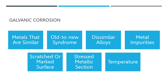There are several types of galvanic corrosion: similar metals, old-to-new syndrome, dissimilar alloys, metal impurities, scratched or marked surface, stressed metallic section, and temperature. When two distinct types of metals are metallically connected while in the electrolyte, corrosion manifests most obviously. Every metal has a unique electrical potential; the metal with the most negative potential is the anode and the less negative one is the cathode. An active metal with a high negative potential is anodic relative to most other metals, while a noble metal with a low negative potential is cathodic. Dissimilar metal corrosion is at its worst when the potential difference between the two metals is the largest.